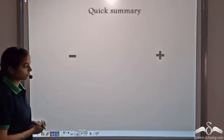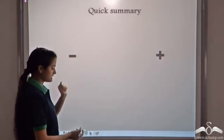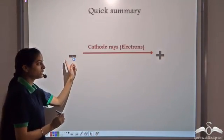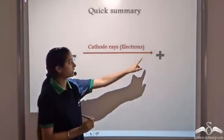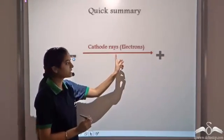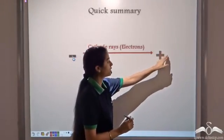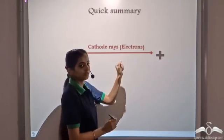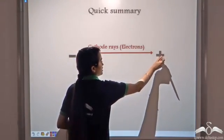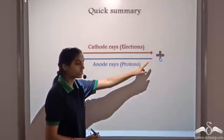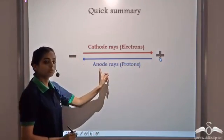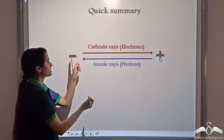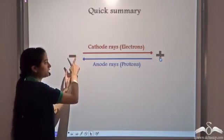To revise: the beam which moves from the negative towards the positive terminal is known as cathode rays. Since it is attracted towards the positive terminal, the particles — electrons — are negatively charged. The beam which moves from the positive terminal towards the negative terminal is known as anode rays; it consists of protons, which are positively charged.